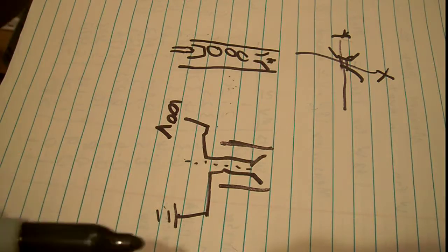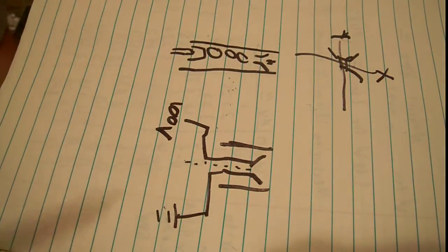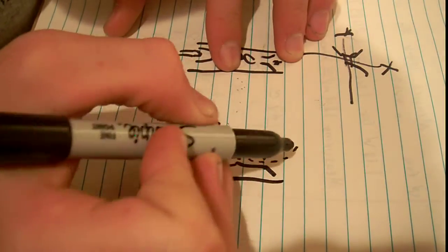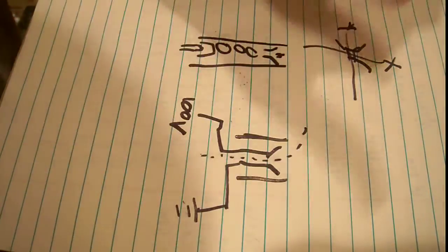Then, since electrons are attracted by positives, they'd be attracted to the left side and repelled by the right side, so then they would curve to this side, right? Obviously not by that much, but you get the idea it'd be a curve.